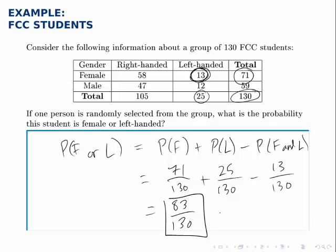If we write that as a decimal, that's approximately 0.638. We can also think about this by adding up all the students that meet this description, so female or left-handed.